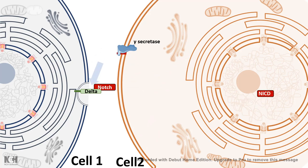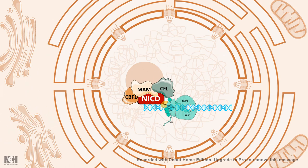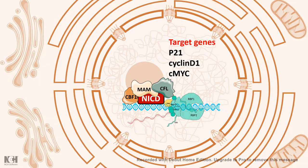Inside the nucleus, NICD gives rise to transcriptional changes. It interacts with Mastermind, CSL, and CBF1, which are all co-activators, and that leads to a defined transcriptional program. Among the many target genes of the Notch signaling pathway, famous ones are p21, Cyclin D1, and c-Myc. All of these genes are important for cell division and cell cycle progression, so they lead to cellular proliferation.